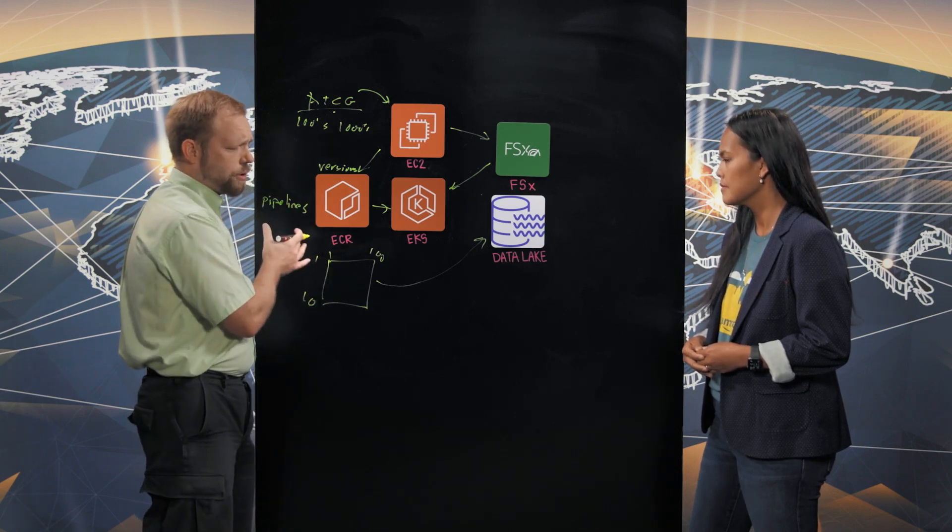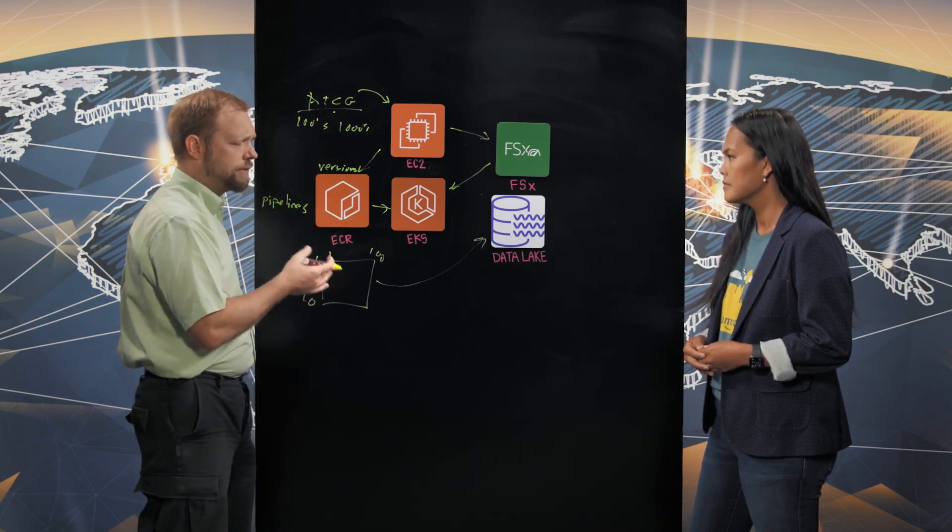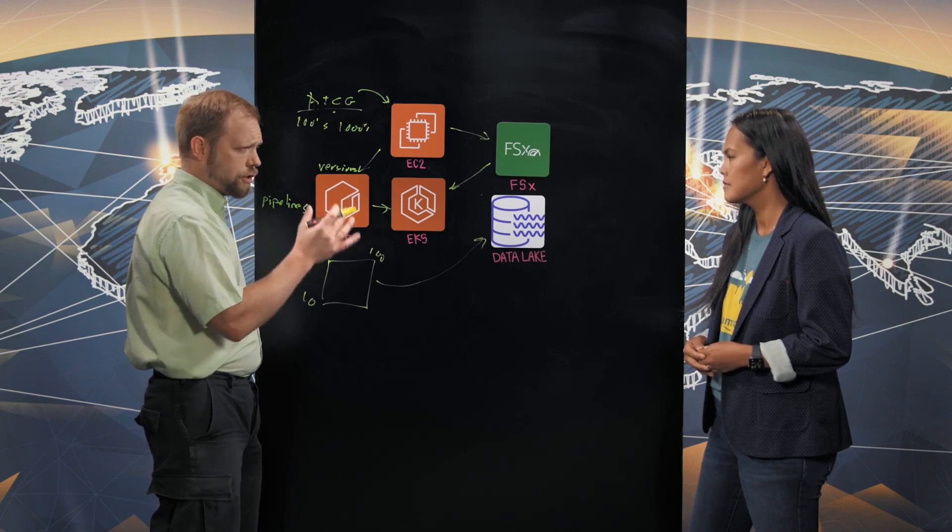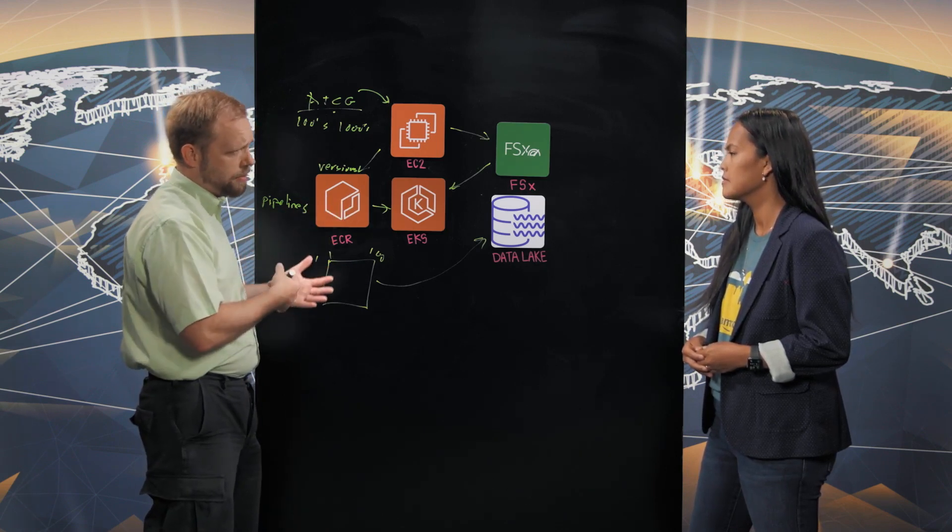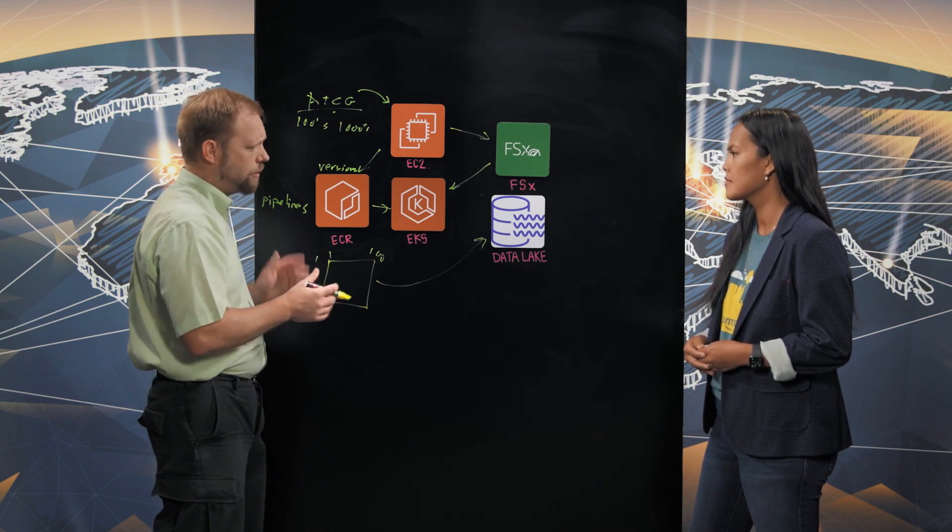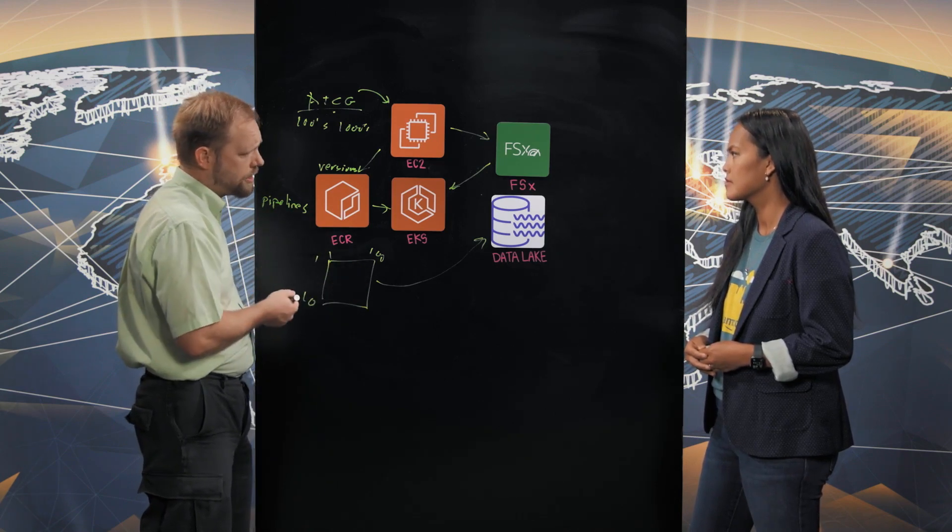So to go from zero to 100 instances without really even needing to think about it. And then to know that those will scale down when we're done because these are sporadic pipelines. We don't run them every night. They don't need all those machines running. And that saves us in cost.